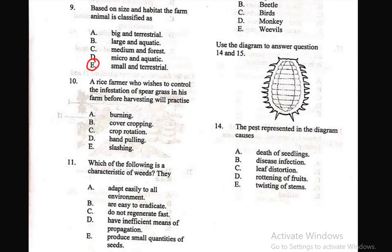Question 10: A farmer who wishes to control the infestation of spear grass in his farm before harvesting will practice — A) burning, B) cover cropping, C) crop rotation, D) hand pulling, E) slashing. The right answer is E — slashing. Those grasses can be slashed out with a cutlass.